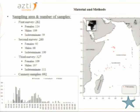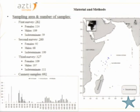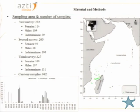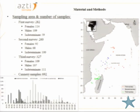This slide shows the sampling area, focusing on the Western Indian Ocean. We can see the location where the samples were collected and the number of samples collected by survey. In total, 692 females were collected from Seychelles.